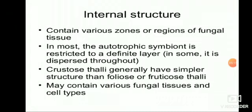Coming to the internal structure of Lichens, they contain various zones or regions of fungal tissue. In most, the autotrophic symbiont — whether cyanobacteria or algae — is restricted to a definite layer, though in some it is dispersed throughout the structure. Crustose thalli generally have a simpler structure than foliose or fruticose thalli.